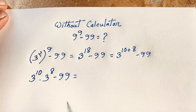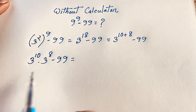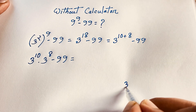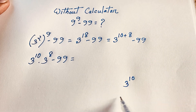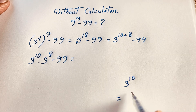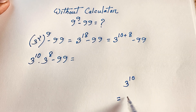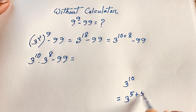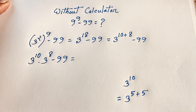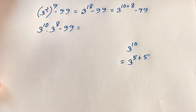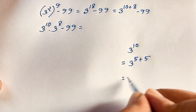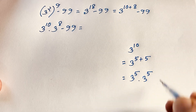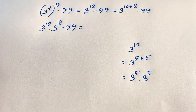Now here is 3 to the power 10. So 3 to the power 10 is equal to what? I can easily write 3 to the power 10 as 3 to the power 5 plus 5, which equals 3 to the power 5 times 3 to the power 5.